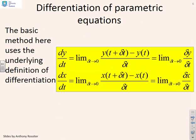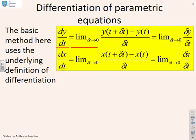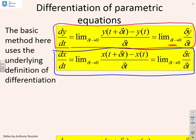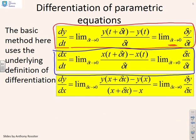So this is how we do it. The basic method uses the underlying definition of differentiation. By definition, dy/dt is the limiting value as δt tends to 0 of [y(t + δt) − y(t)] / δt, or equivalently the limiting value of δy/δt. Similarly, dx/dt is the limiting value of δx/δt. Now dy/dx is the limiting value of δy/δx.